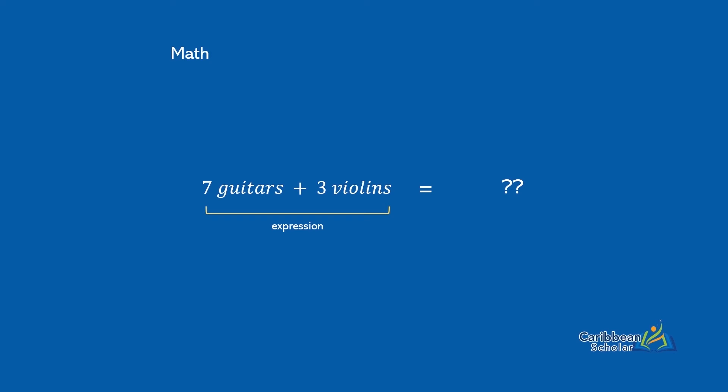If we include another expression, now we can read this as a sensible math sentence. We'd have 7 guitars plus 3 violins equals 10 instruments. And in math, this type of sentence would be called an equation.